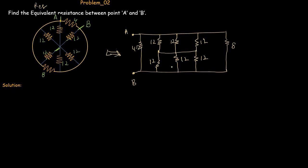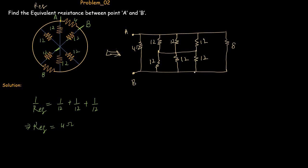We can now solve this network using the rules for series and parallel circuits. The three resistors between point A and the center point are in parallel, so 1/R_equivalent = 1/12 + 1/12 + 1/12, giving R_equivalent = 4 ohms. The same applies to the three 12 ohm resistors between the center point and point B, which also give an equivalent resistance of 4 ohms.